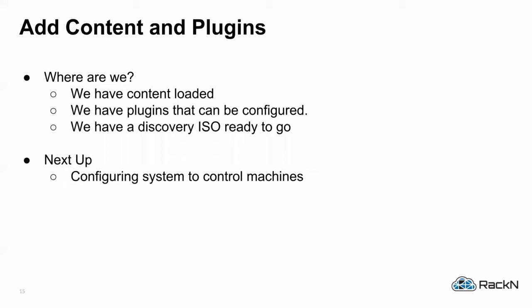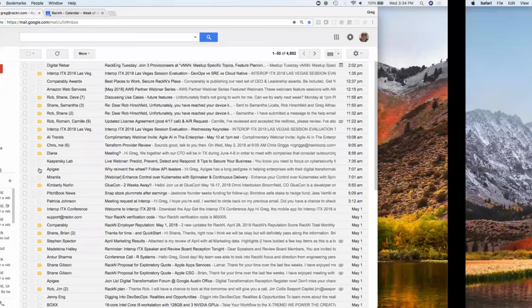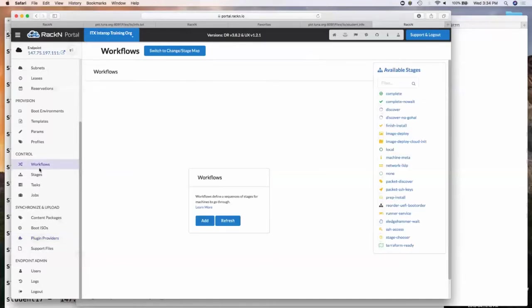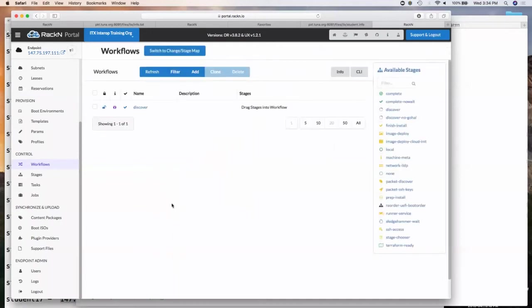Now we want to configure the system to control machines. We're going to create what we call workflows. The workflows represent what we call stages — something like 'install CentOS' or 'inventory the box.' We want to link those together into a chain of actions so that at the end we have a deployed system. We're going to create two workflows. Head over to the workflow page, click 'add', and type 'discover'.